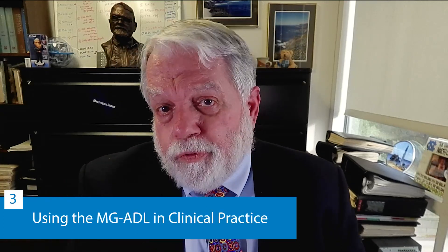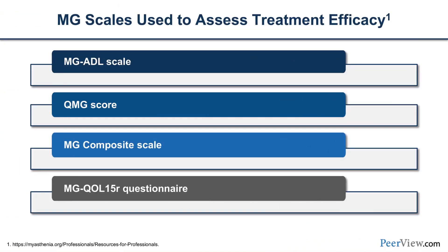Then we have to evaluate the decision made longitudinally — did we make the right decision? Are we experiencing new adverse events? Are we delayed in obtaining the expected response? These are ongoing discussions with the patient. The MG-ADL and other outcome measures were first designed for use in clinical trials, but several have become very adaptable to day-to-day clinical practice.